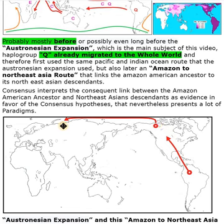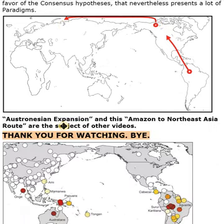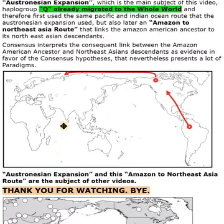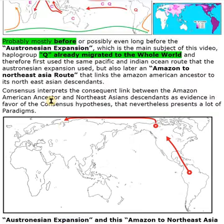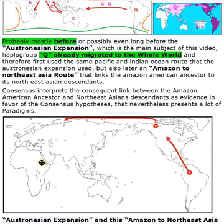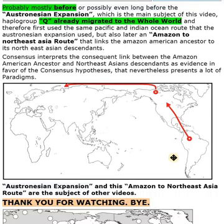Consensus interprets the consequent link between the Amazon American ancestor and Northeast Asian descendants as evidence in favor of the consensus hypothesis, which nevertheless presents a lot of paradigms. The Austronesian expansion and this Amazon to Northeast Asia route are the subject of other videos. Thank you for watching.